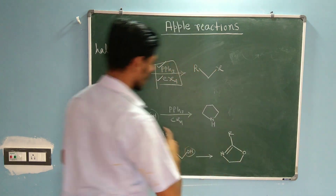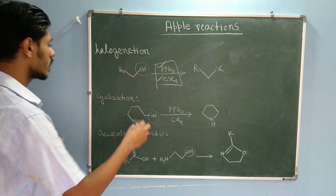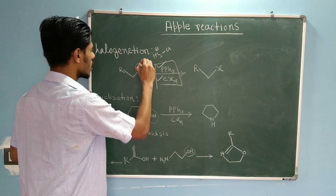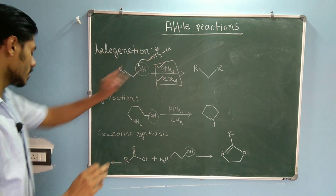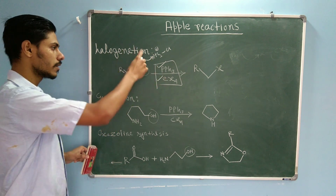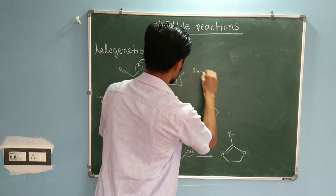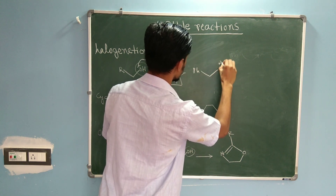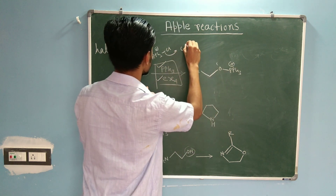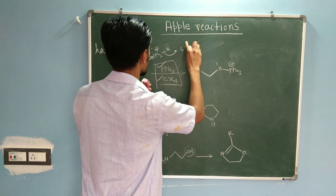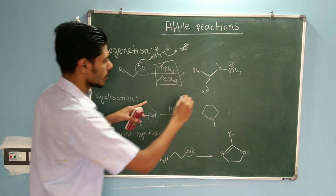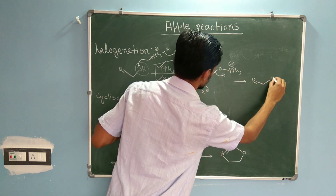In all three reactions, forming Ph3P+–X is the first step. For the Halogenation reaction: the active reagent Ph3P+–X has a positive charge on phosphorus, so the alcohol OH uses its lone pair to attack the phosphorus. This generates an O–PPh3+ intermediate with X⁻ as the leaving group. The X⁻ then attacks the carbon, which departs with the oxygen, giving you the alkyl halide product.